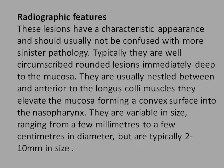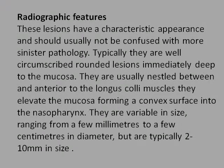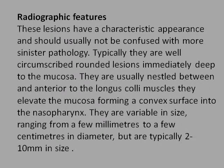Radiographic features: these lesions have a characteristic appearance and usually do not confuse with more sinister pathology. Typically they are well-circumscribed rounded lesions immediately deep to the mucosa. They are usually nestled between and anterior to the longus colli muscles, which they elevate forming a convex surface into the nasopharynx. They are variable in size, ranging from a few millimeters to a few centimeters in diameter, but are typically 2 to 10 millimeters in size.